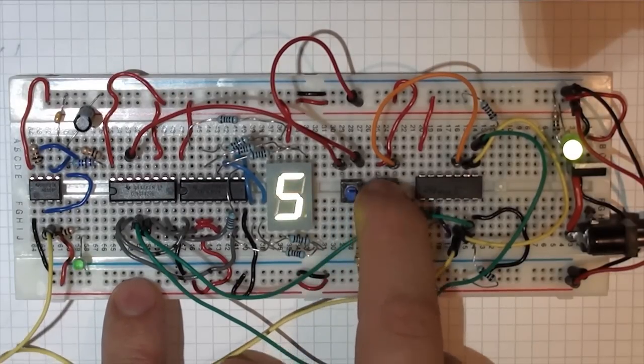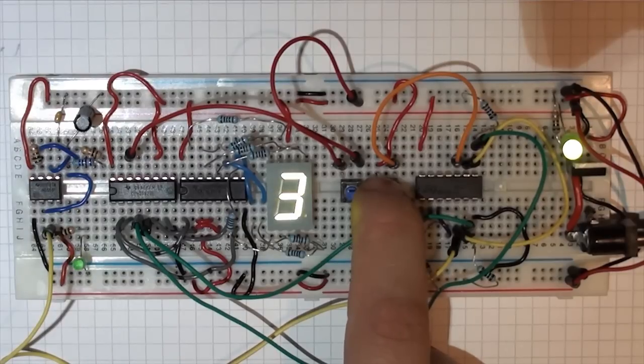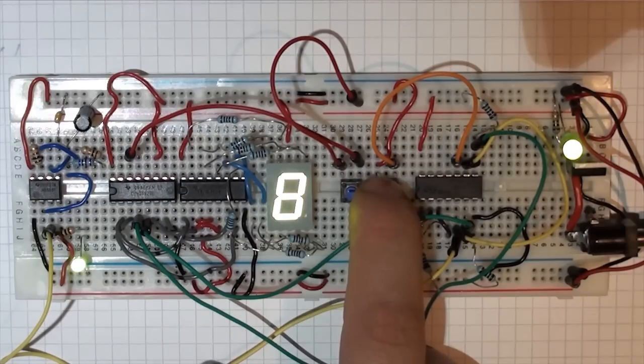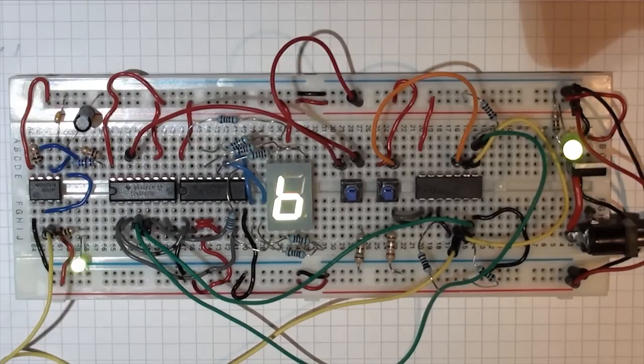So when I press this now, you can see that it starts to count. And when you hold this button, it counts backwards: one, zero, and that goes nine, eight, seven, six. So it counts down, and when I let go of the button, it starts to count forwards again.